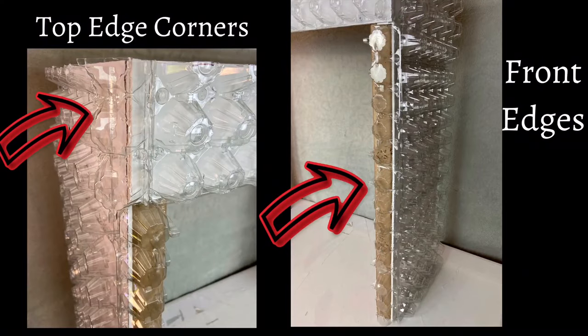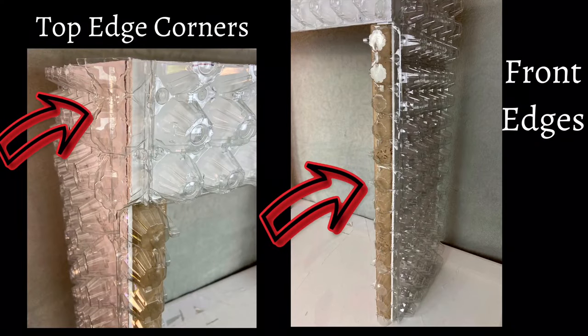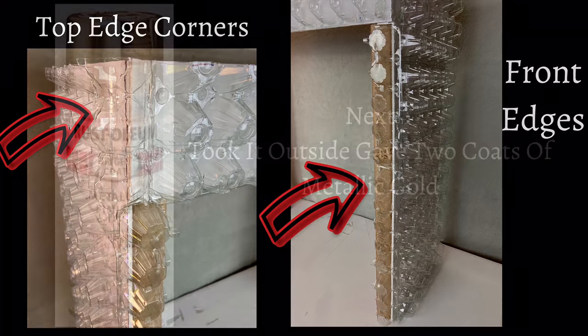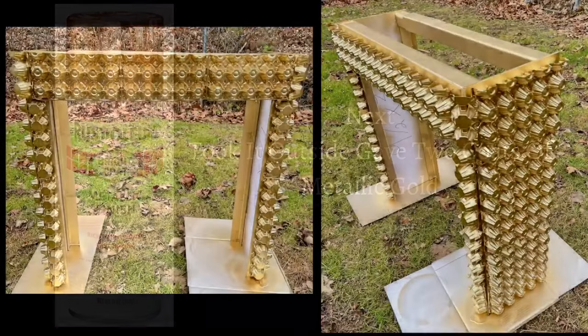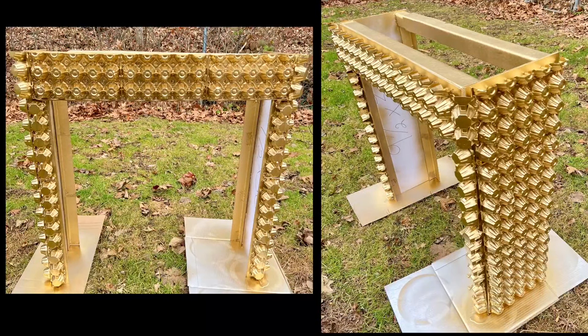I also cut pieces of the plastic egg holder and glue them on the top corner edges and on the front. Once that was done I took it to a well-ventilated area and spray painted two coats of metallic gold.